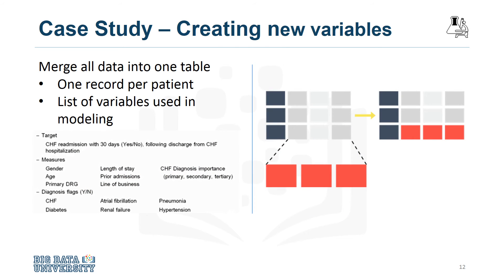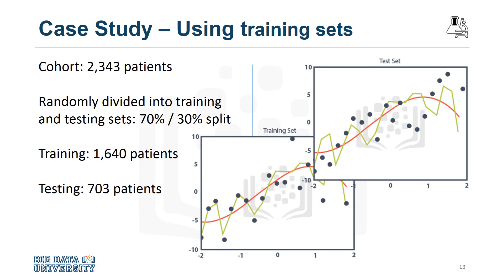Here is a list of the variables that were ultimately used in building the model. The dependent variable, or target, was congestive heart failure readmission within 30 days following discharge from a hospitalization for congestive heart failure, with an outcome of either yes or no. The data preparation stage resulted in a cohort of 2,343 patients meeting all of the criteria for the case study. The cohort was then split into training and testing sets for building and validating the model, respectively.